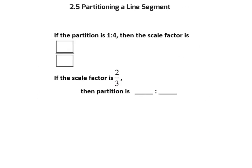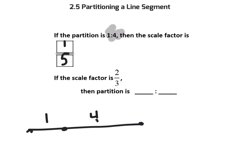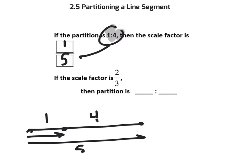This just reverses the practice. The partitioning ratio is 1 to 4 — 1 part to 4 parts — so ultimately there are 5 parts in total. The scale factor would be 1 fifth. There are 5 parts in the original and we are 1 away, so you can learn a quick way to get there.